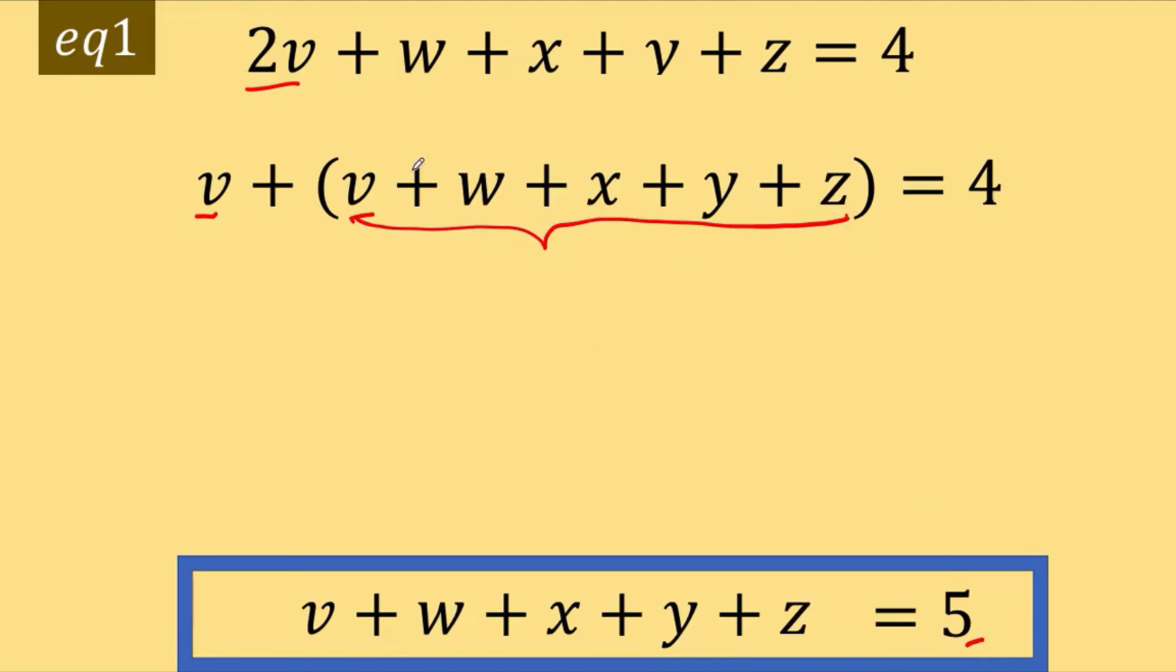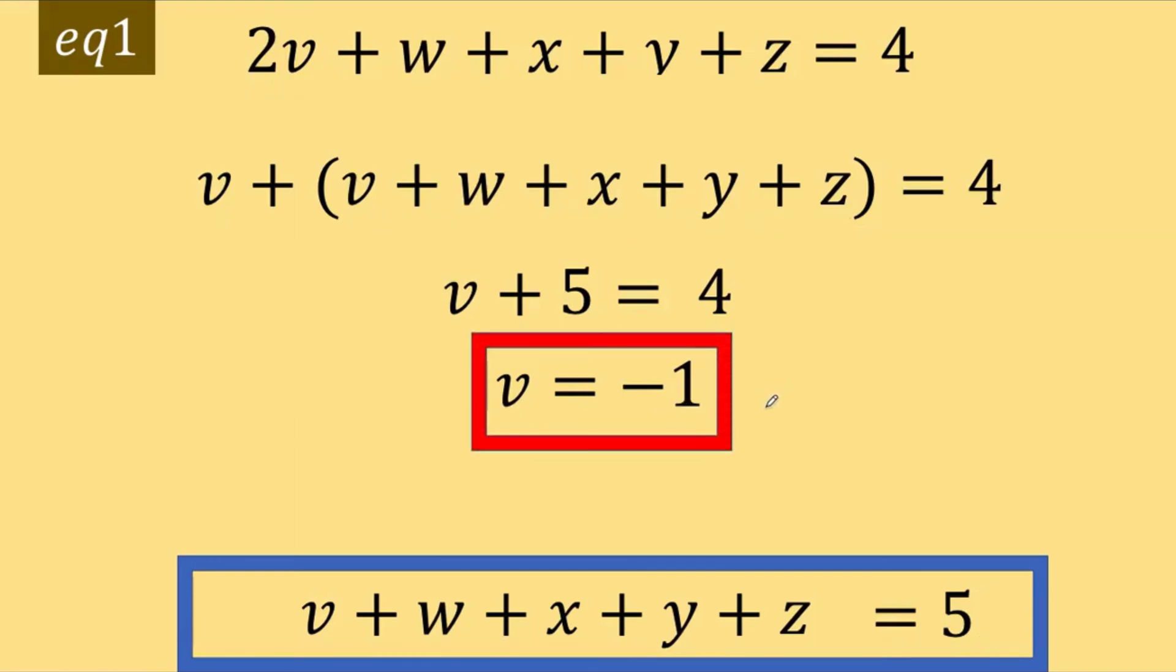But we know the value of this sum that is equal to 5. So, therefore, we just have to copy the v and replace this sum by 5 because that's the result that we arrive at. And finally, we arrive at v equals 4 minus 5, which is negative 1. So, we now have the value of v, and that is equal to negative 1. Let's put that aside.